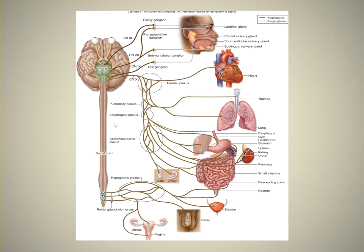Slide 8 provides an overall view of the parasympathetic nervous system. Brown is preganglionic, blue is postganglionic, coming out of the cranium and out of the sacrum. Notice how many organs are innervated by the parasympathetic nervous system.